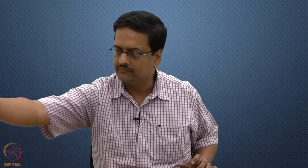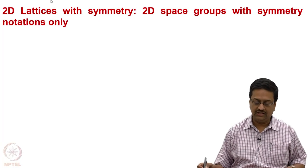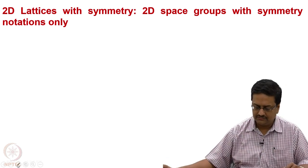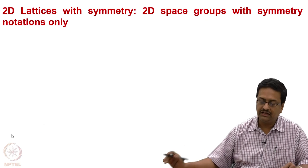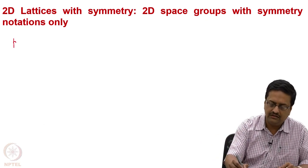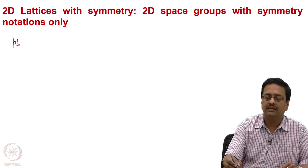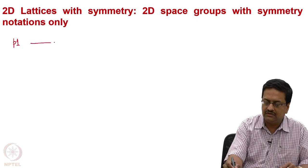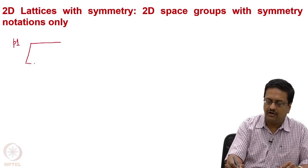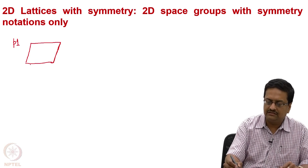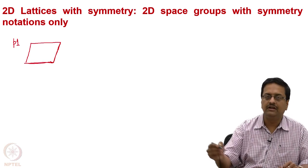We will try to draw these space lattices with symmetry elements only mentioned. The first symmetry element that we have in a 2D lattice is P1, and since there is no symmetry in this — which means it has only a 360-degree rotational symmetry and nothing else — the oblique lattice we draw for the P1 lattice does not have any symmetry element indicated in it.